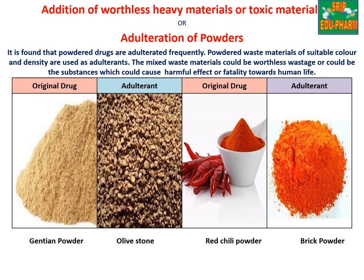The last method for intentional or direct adulteration is addition of worthless heavy materials or toxic materials — adulteration performed using powder material. The adulterants generally resemble the drug in color and density but are waste products or harmful substances that can cause harmful effects. For example, ginseng powder mixed with starch, and red chili powder mixed with brick powder.